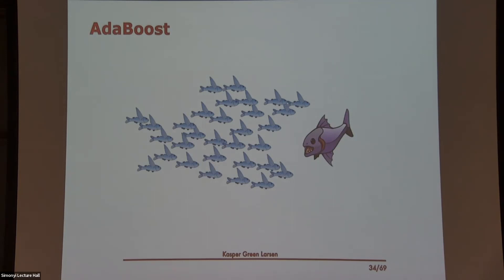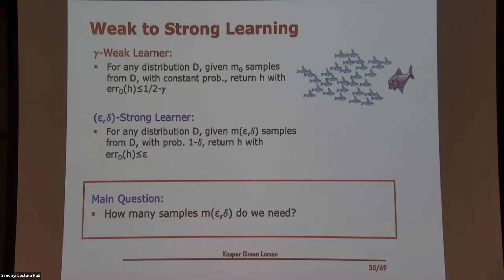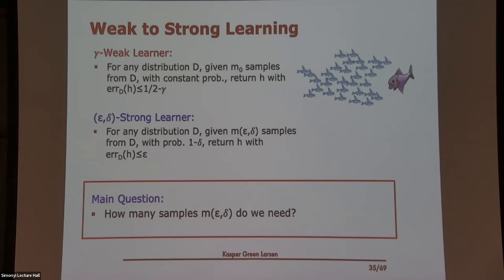The main question we look at is: how many samples do you actually need to construct a strong learner, given parameters epsilon and delta? It's going to depend on epsilon and delta, of course, but also on the VC dimension of the hypothesis set that the weak learner outputs from, and on the advantage gamma over guessing. Those are the parameters involved in this bound.